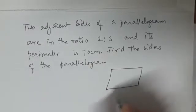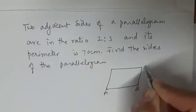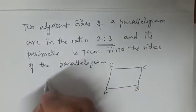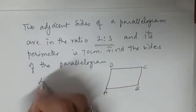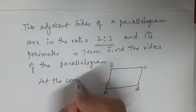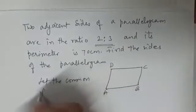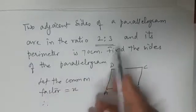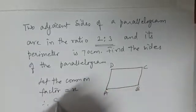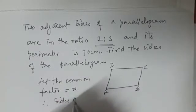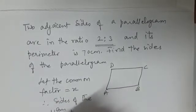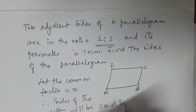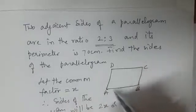We assume the common factor to be x. So let the common factor equal x. Therefore, the sides of the parallelogram will be 2x and 3x. Now in this figure, we can label AB as 3x and BC as 2x.